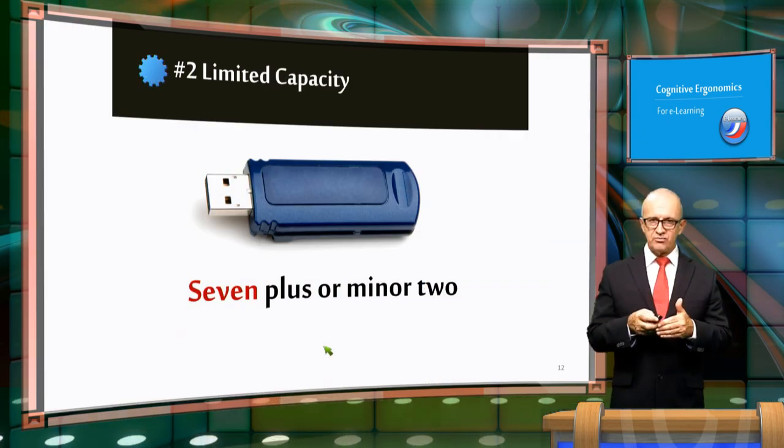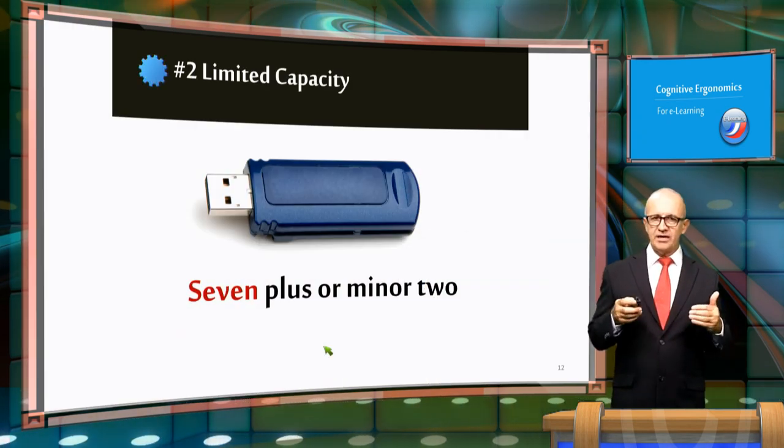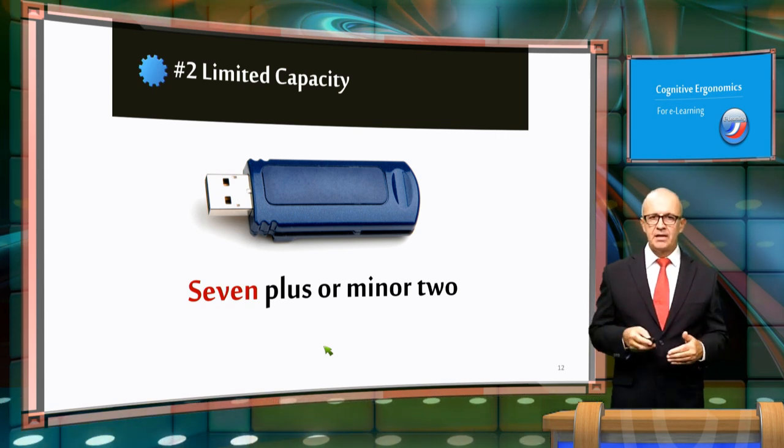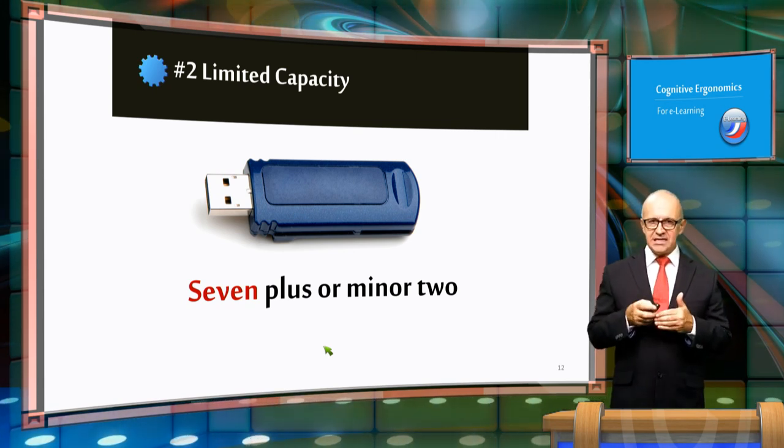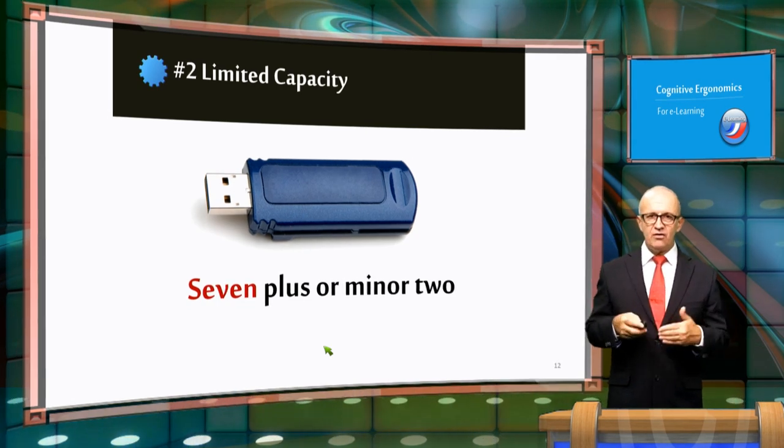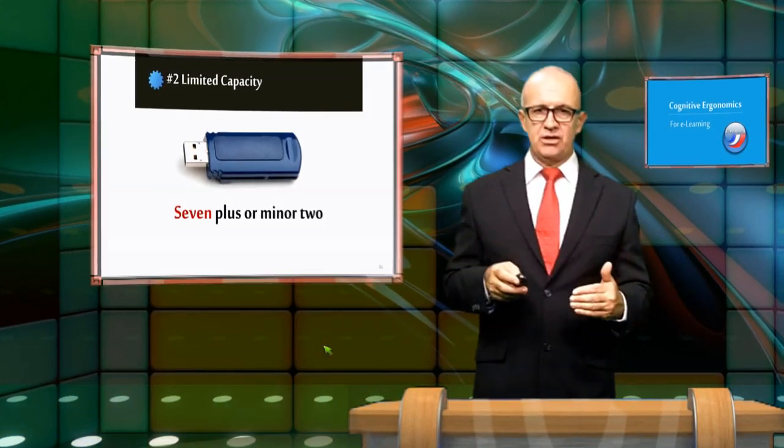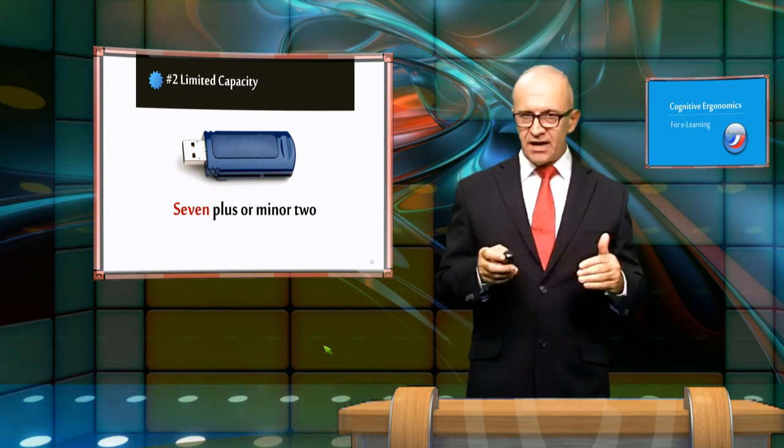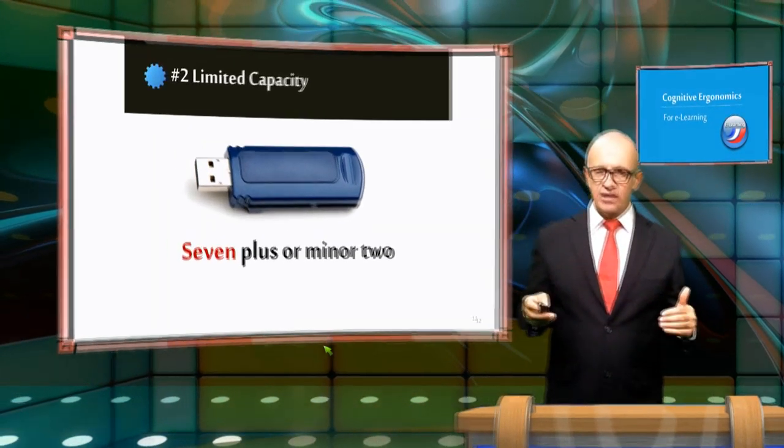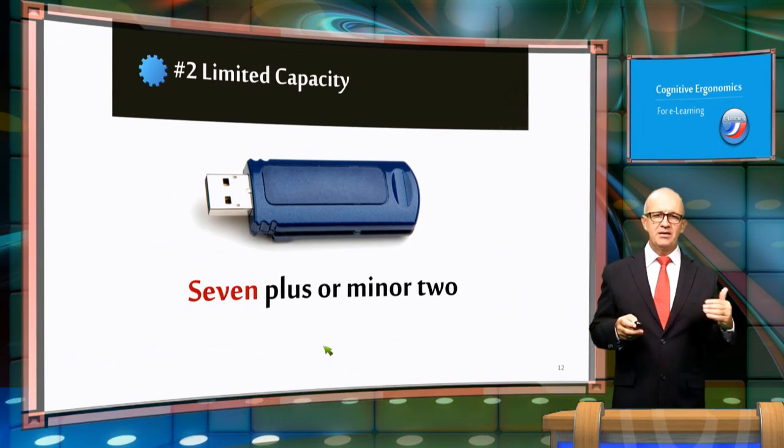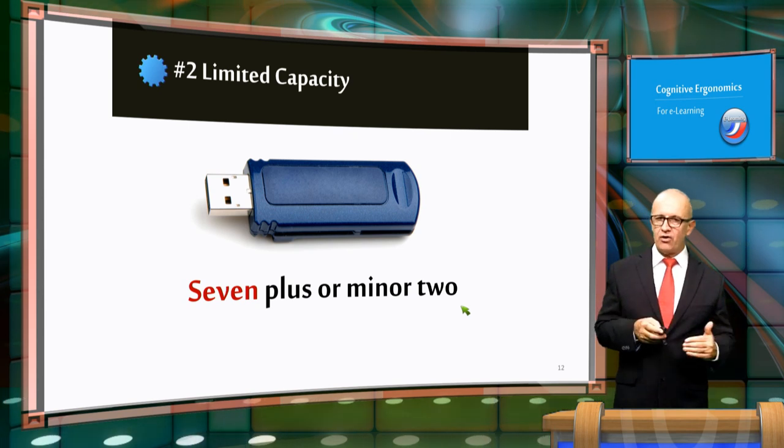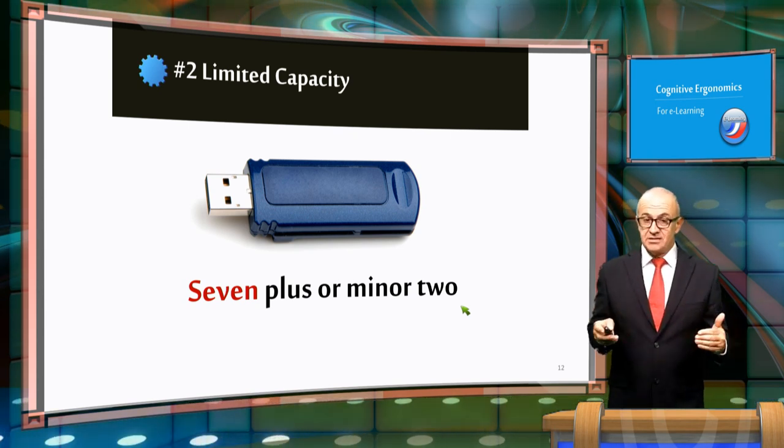The second principle is that the working memory has a limited capacity. People can actively process only a few pieces of information in each channel at one time. In fact, our working memory is only able to manipulate seven plus or minus two items in each channel for approximately 20 seconds.